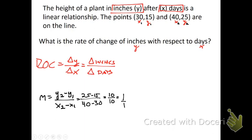So that means that basically the plant grows one inch for every one day. 1 or 1 over 1 is our slope. That would be the answer. And if we just wanted to interpret it, we'd say the plant grows one inch per day. Okay? Let's do another one.